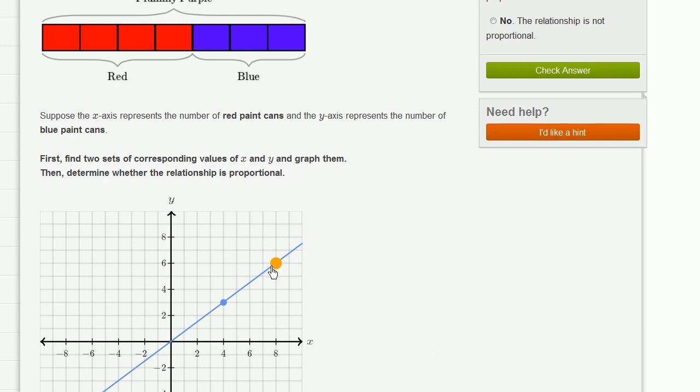Now the question is, is this proportional? You have a proportional relationship if the ratio between these two variables is always the same. And we already said, the ratio between them is always the same. The ratio of blue to red is always going to be 3 to 4.